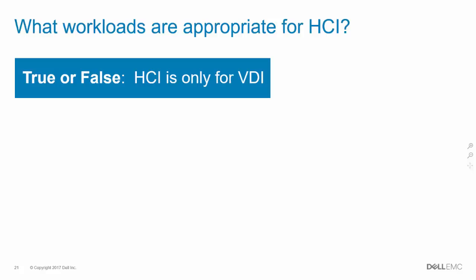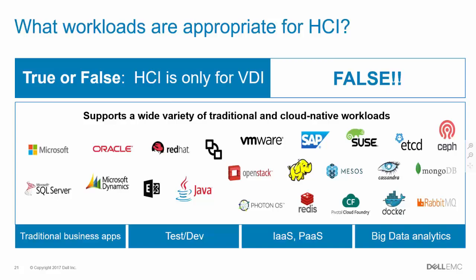So what workloads can you actually run on hyper-converged infrastructure? A common question — and we pose a true or false scenario: is hyper-converged infrastructure only good for VDI? The answer is false. When we look at what people are actually deploying on Dell EMC HCI solutions today, it's an extremely wide variety of not just cloud-native workloads but a lot of traditional workloads as well — all of your standard business applications that you'd normally think of running in a SAN. Customers are also deploying tools and frameworks required for cloud-native workloads — Docker and container environments, Pivotal Cloud Foundry for next-generation application development, OpenStack environments. It's an extremely wide variety of workloads being run on these infrastructures today.